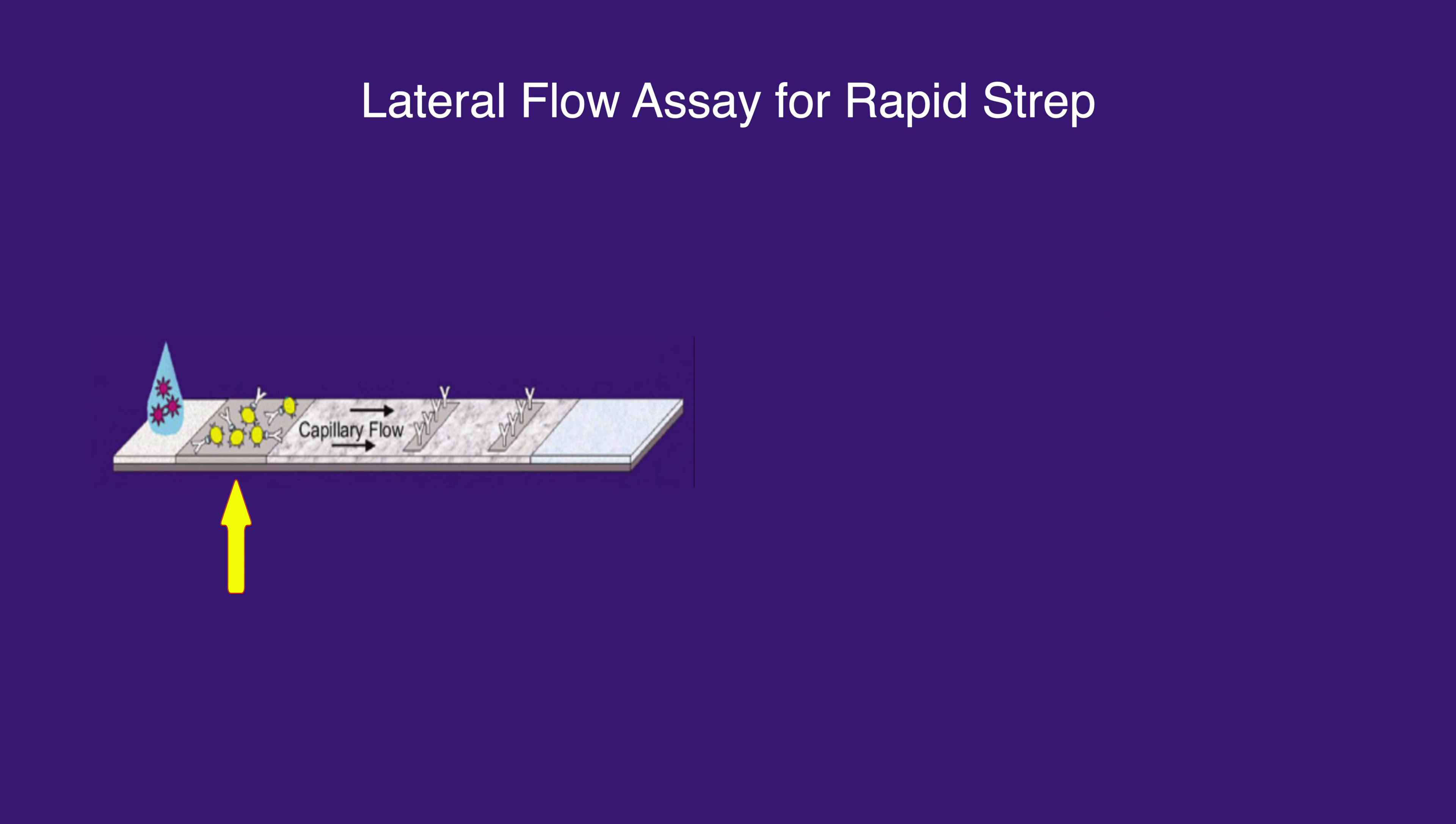In the rapid strep test, the test pad has been pre-coated with rabbit anti-strep A antibody in the test band region and goat anti-rabbit antibody in the control band region.